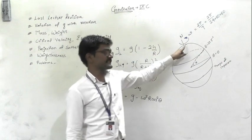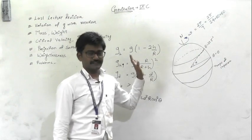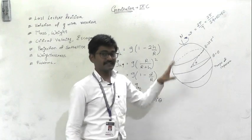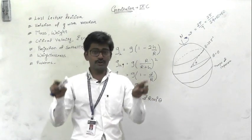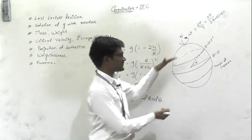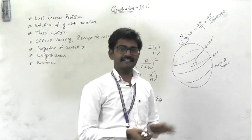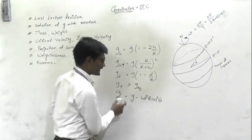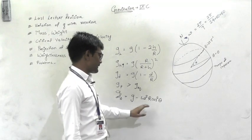Gravity at the poles is greater than gravity on the surface at the equator. This is because of the shape of the Earth — due to rotation, the radius of the Earth at the equator is a little greater, making g slightly less there.